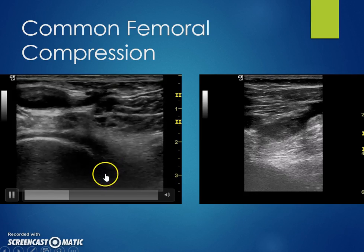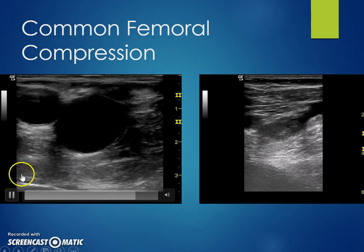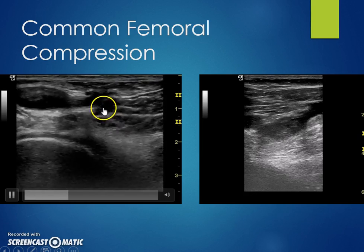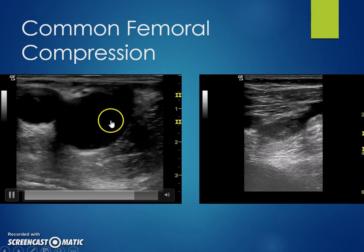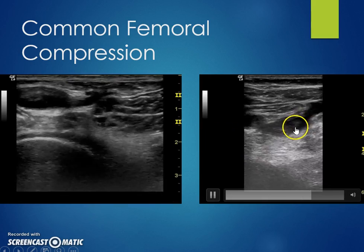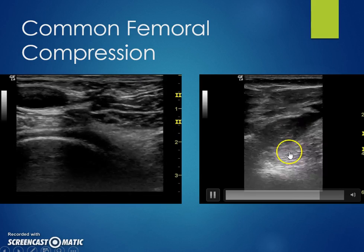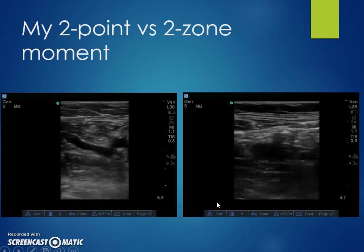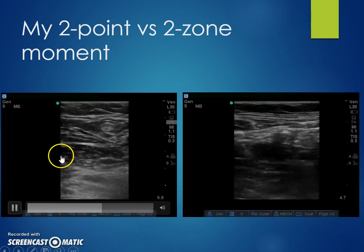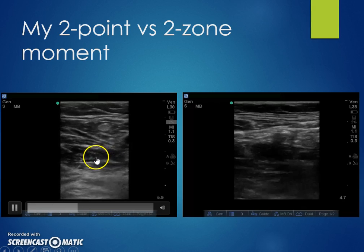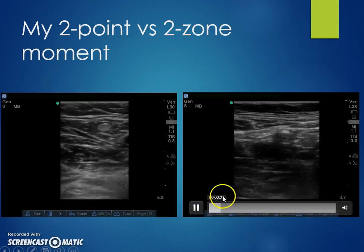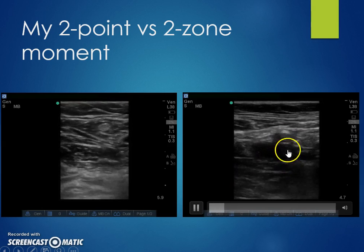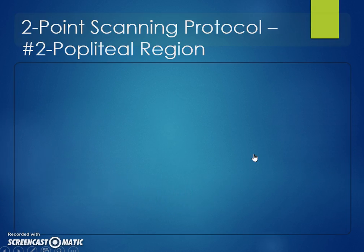Here's an example of normal compression — note the depth is sufficient to see the femoral head, which is a good landmark to frame your image. You can see the saphenofemoral junction completely compressing. In contrast, you can see that with a clot inside the lumen, the vein fails to completely collapse. This also illustrates why the two-zone technique is helpful: compression at the saphenous junction may appear completely normal, but just distally at the femoral bifurcation there's a large clot — so scanning distally is essential.